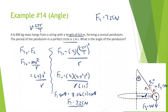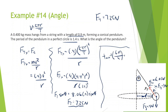Now we have the force of tension as 7.25 newtons. Using the Pythagorean theorem, the force of tension in x equals the square root of 7.25² minus 4², which gives 6.05 newtons. Finally, inverse tan of opposite 6.05 divided by adjacent 4 gives us theta equals 56 degrees.